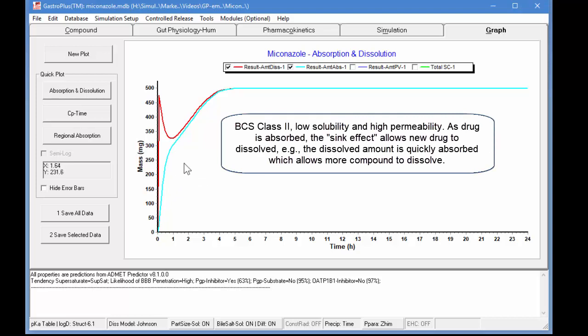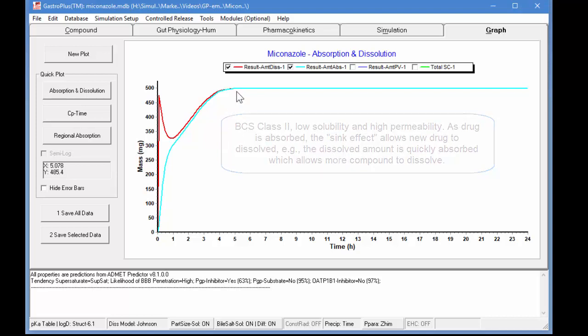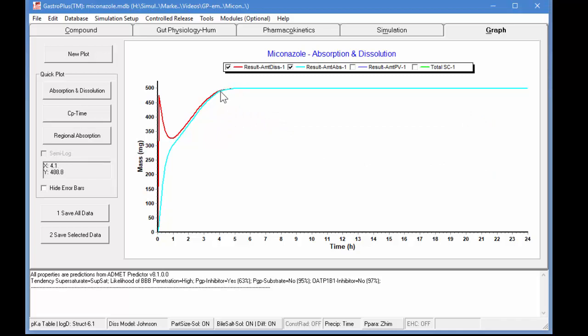Here we see the sink effect of miconazole. It is a class II BCS compound and as a little bit of the compound dissolves it is quickly absorbed therefore allowing more of the compound to dissolve. And notice that as I move my cursor along these lines these values change so the x value is the time and the y value is the mass. If we look at the amount absorbed we see that around five hours you're getting up to 500 milligrams of the dose absorbed.